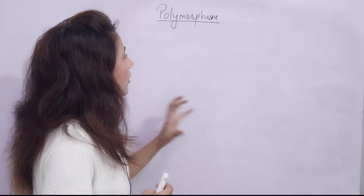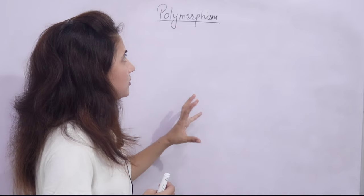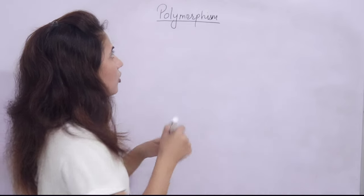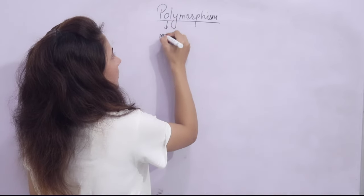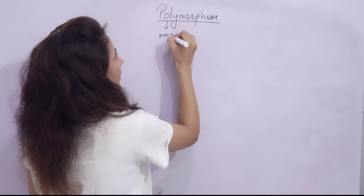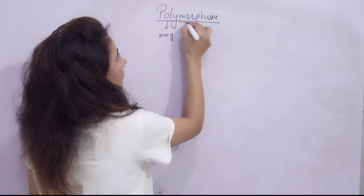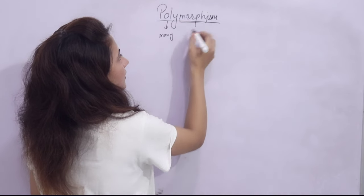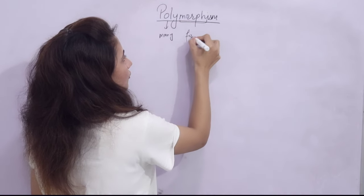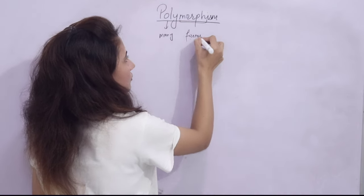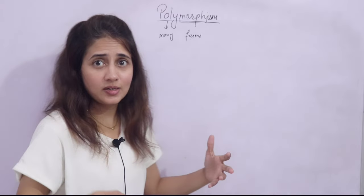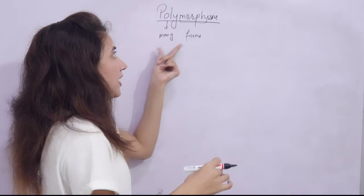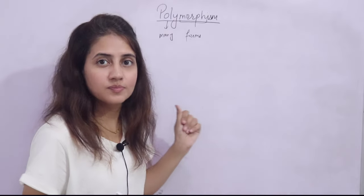So now, what is polymorphism? Poly means many and morph means forms. You will get this type of definition everywhere — many forms.